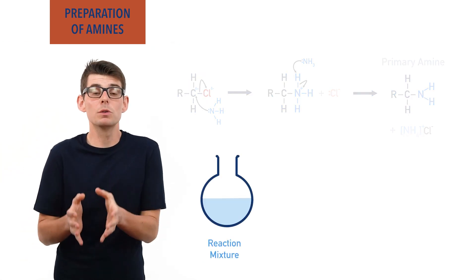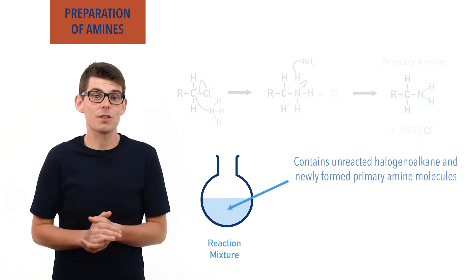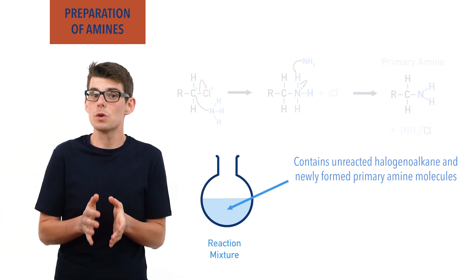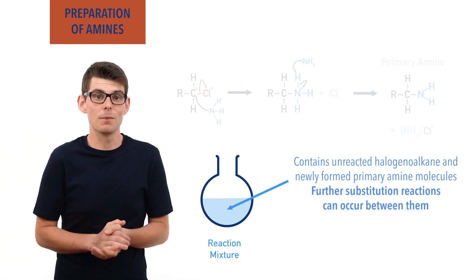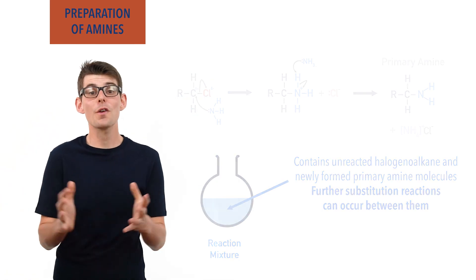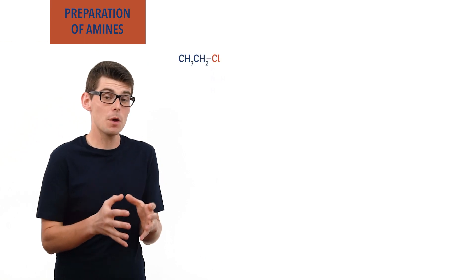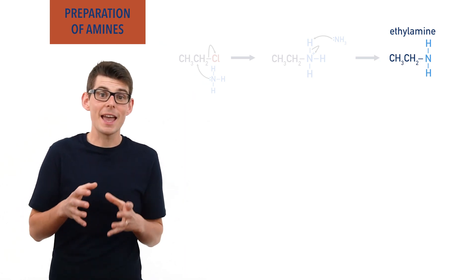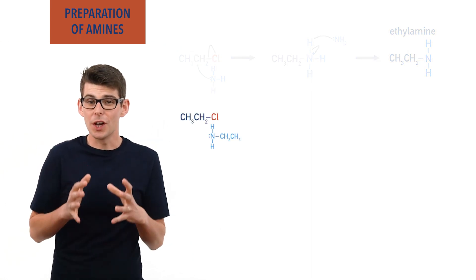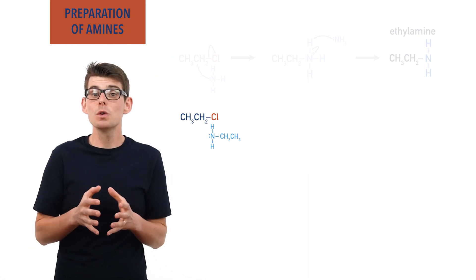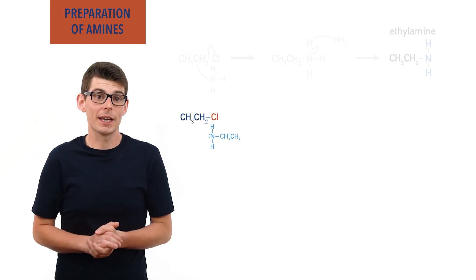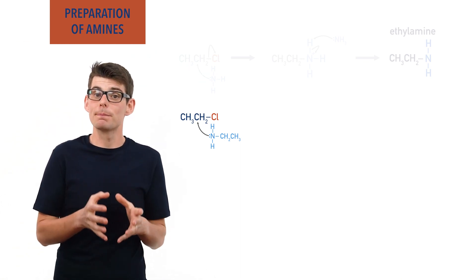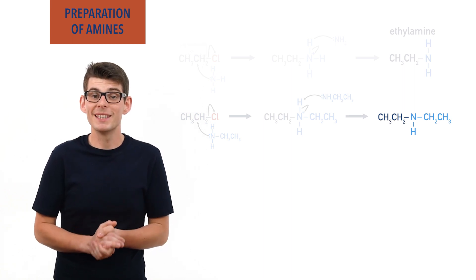In the reaction mixture there will be molecules of unreacted halogen alkane and primary amines that have just been formed. As primary amines are able to act as nucleophiles just like ammonia, further nucleophilic substitution reactions will occur. For example, in the reaction between chloroethane and ammonia, ethylamine forms — a primary amine. Ethylamine molecules can then react with leftover chloroethane molecules; the nitrogen in the amine group attacks the partially positive carbon in chloroethane, and the nitrogen ends up bonded to two ethyl groups, forming the secondary amine diethylamine.